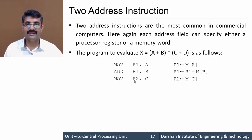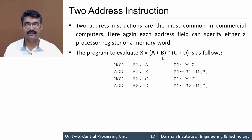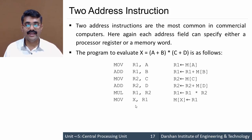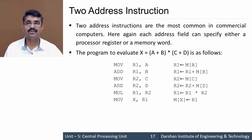Similarly for c + d: MOV R2, c loads c into R2, then ADD R2, d gives R2 ← R2 + M[d], so R2 contains c + d. Now we multiply: MUL R1, R2, storing the result back in R1. Finally, we assign the result to x: MOV x, R1, meaning M[x] ← R1. Comparing with three address, the two address code is of larger length.